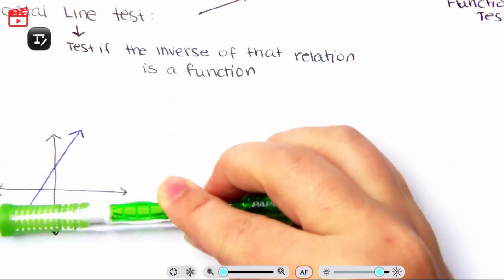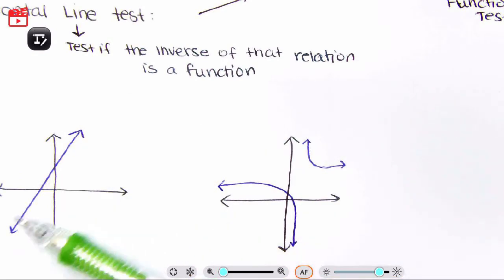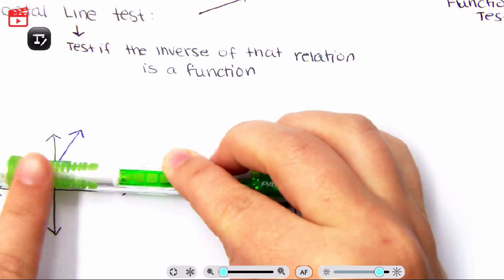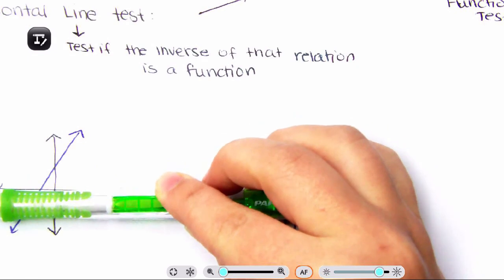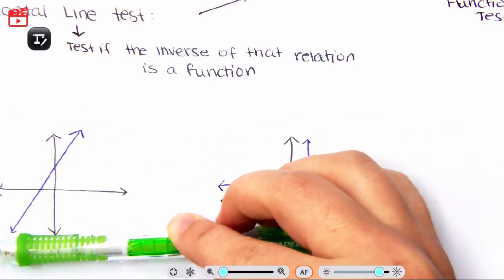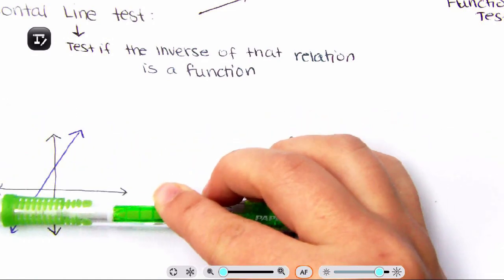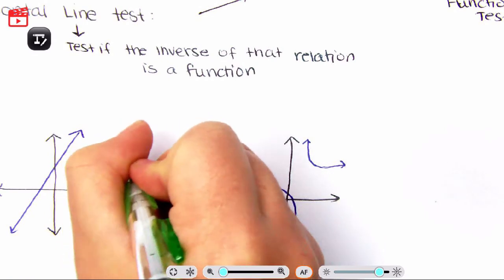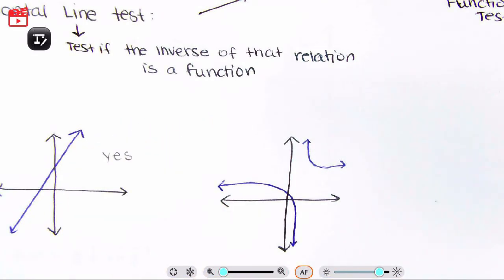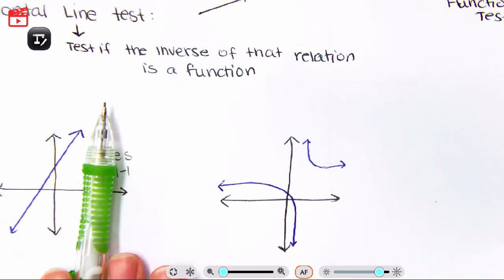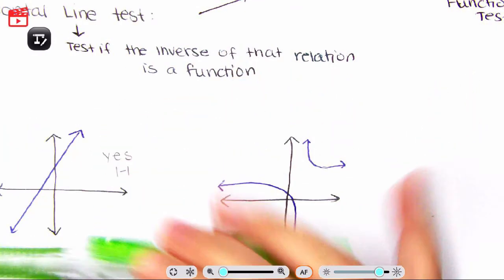Now we also have the horizontal line test. It tests if the inverse of that relation is a function. If you take your pencil and put it horizontally and go through your relation, that line should only touch the pencil at one point at each time. So for every X there is one Y, and for every Y there is one X. This means yes, the relation is one-to-one because it passes both the vertical and horizontal line tests.